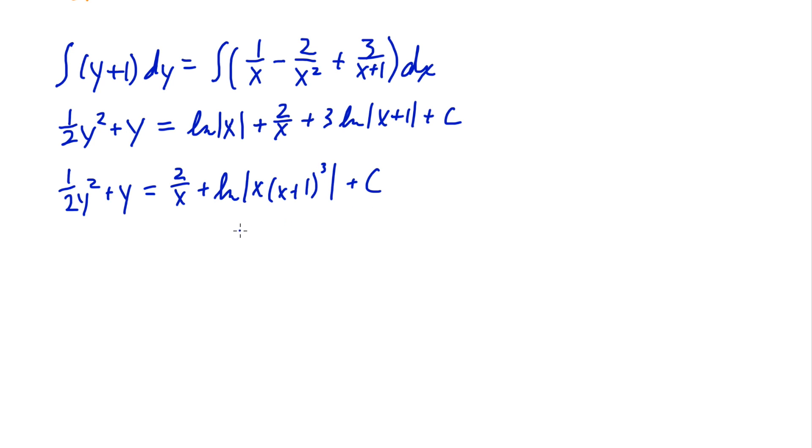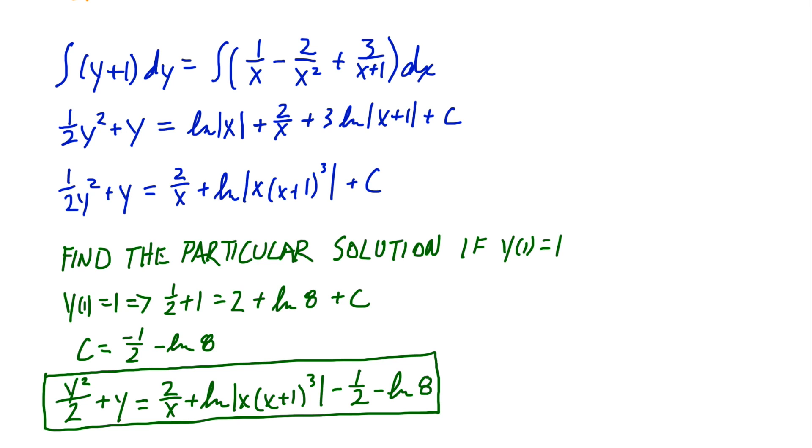We have the general solution. Although we didn't have criteria for the particular solution at the beginning of the problem, I included a condition just so we could solve for a particular solution. By substituting 1 in for y and x, we can get c, then substitute into our general solution to obtain our particular solution.